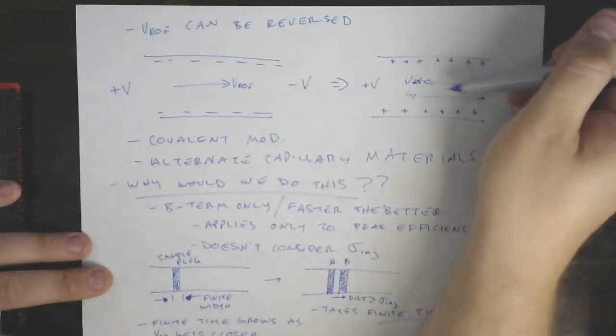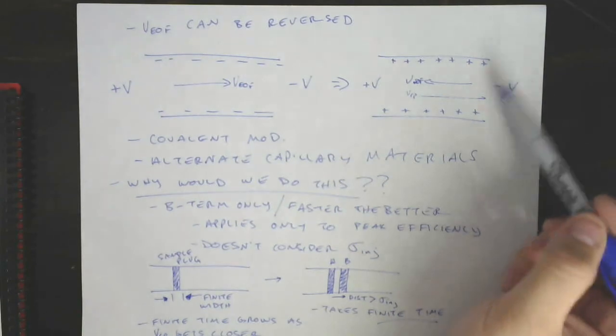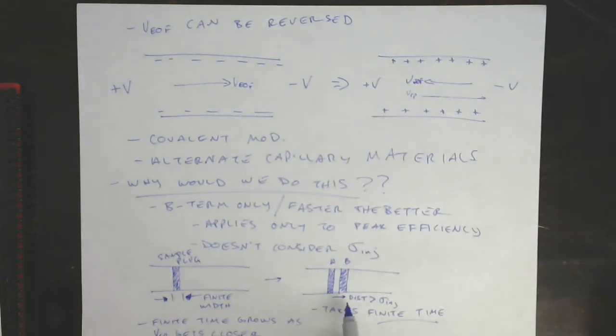This opposition EOF technique is used to resolve isotopes in CE. So you can take a chloride isotope, you know, 35 versus 37. They have slightly, slightly different sizes. They're going to have the same charge, right? But they're going to have very slightly different sizes as they try to move through solution. If you can set up a situation that takes a really long time to make them separate, you can get them to separate. So that's one application of this.